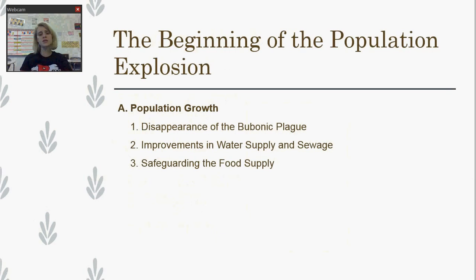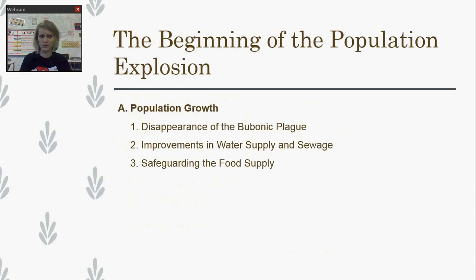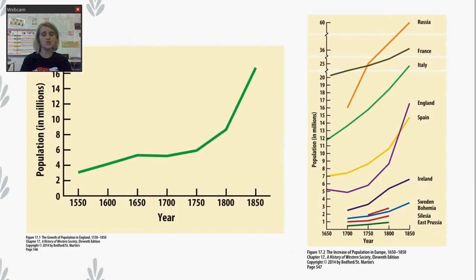There is also an increased food supply with some of the crops brought in from the New World. There is more food available that is more accessible to poor populations — the potato being a big one, think like in Ireland. With this new food supply and being able to maintain it, it's going to allow for more people to be around. The population grows almost double in this time period, which is a really big boost.